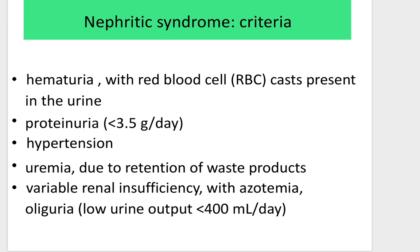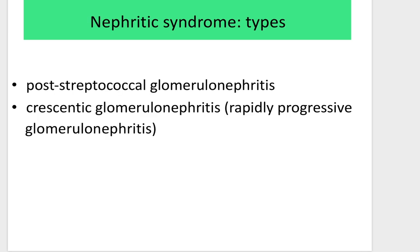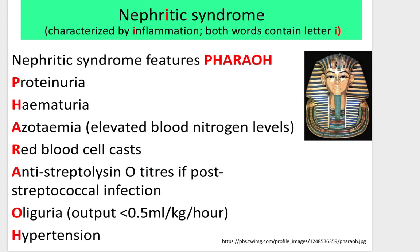Additionally for nephritic syndrome, hypertension is typical. It can involve uremia due to retention of waste products, variable renal insufficiency with azotemia, and oliguria with low urine output less than 400 ml per day. The key difference: nephrotic syndrome is by its nature non-inflammatory, while nephritic syndrome is inflammatory — both words contain the letter 'I' for inflammation.